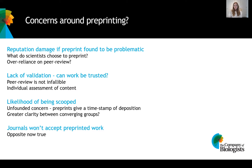Tying into that reputation concern is the issue of a lack of validation because the work hasn't been through peer review. But we also know that peer review is not infallible — we do see paper retractions and problems with published peer-reviewed work. So there may be some over-reliance on peer review, and as researchers, there has to be some degree of individual assessment of new research when drawing conclusions from it, rather than assuming that because something has been published in a journal it can be completely relied upon.